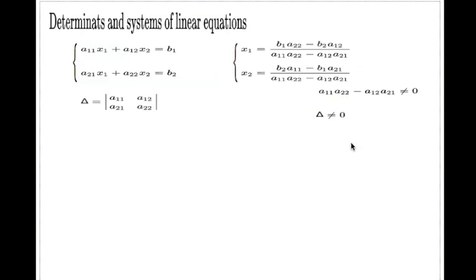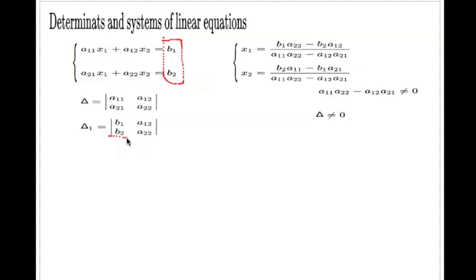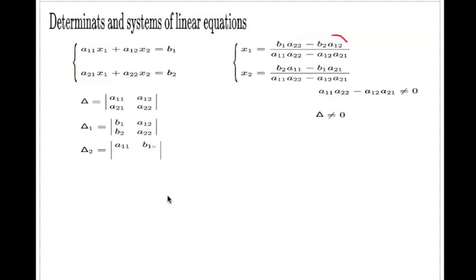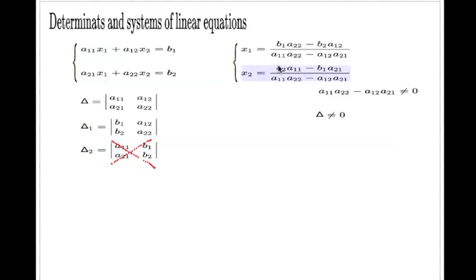You just build up the determinant from the matrix and test if it is zero or not. Now, what about the numerators? I'll call the determinant Delta₁: I take the principal determinant, remove the first column, and replace it with the right-hand side. Computing that determinant — multiplying across one diagonal and subtracting the other — gives exactly the numerator for x1. For x2, the determinant Delta₂ is formed by crossing out the second column and replacing it with the right-hand side, giving the numerator for x2. So in terms of these determinants, the solution is x1 = Delta₁/Delta and x2 = Delta₂/Delta.